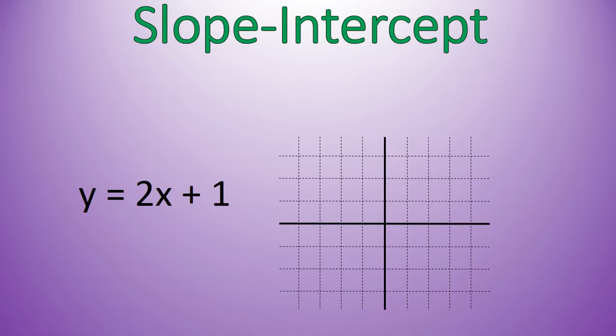First of all, the reason this is called slope-intercept form is because in just the way the equation is written, you are given the slope and the y-intercept. The slope is the number in front of x, so the slope of this line is 2, and the y-intercept, or the place it crosses the y-axis, is 1.